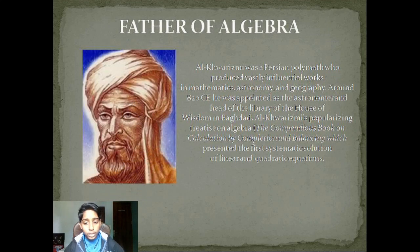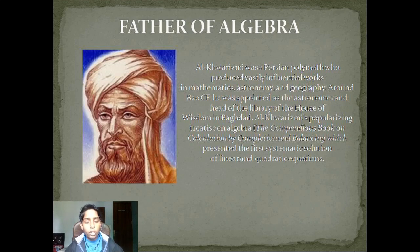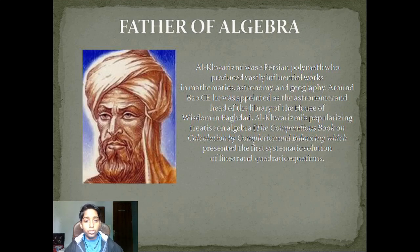The father of algebra is Al-Khwarizmi. Al-Khwarizmi was a Persian polymath who produced vastly influential works in mathematics, astronomy, and geography. Around 820 CE, he was appointed as an astronomer and head of the library of the House of Wisdom in Baghdad.